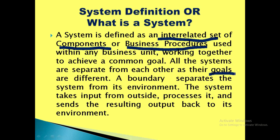All systems are separate from each other as their individual goals are different. For example, in a computer system, the output devices give output and the processor processes instructions — their individual goals differ, but they work in an interrelated manner to give output to the user. The boundary separates the system from its environment. The system takes input from the outside, processes it, and sends the resulting output back to its environment.